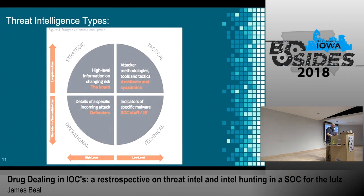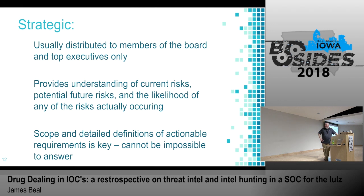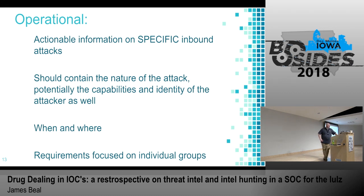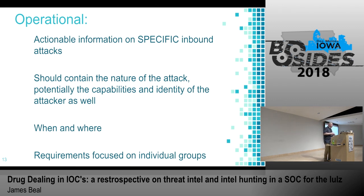Quickly going over the threat intel types — also from the MWR paper — they break out four subtypes. Strategic intel goes to the board and executives: reports based on current risk, future risk, and likelihood of risks occurring. It's super important to take into that future piece, because that's really what they're looking for. Operational intel would be actual information on specific inbound attacks — tied to specific attacks and the likelihood of those things occurring in your company, potentially when and where, focused on individual groups.